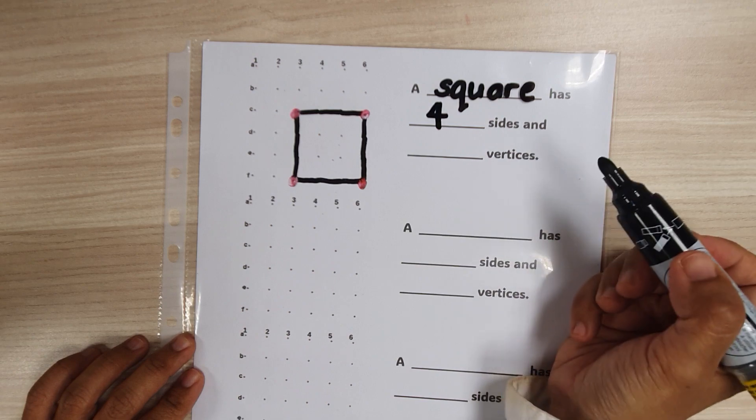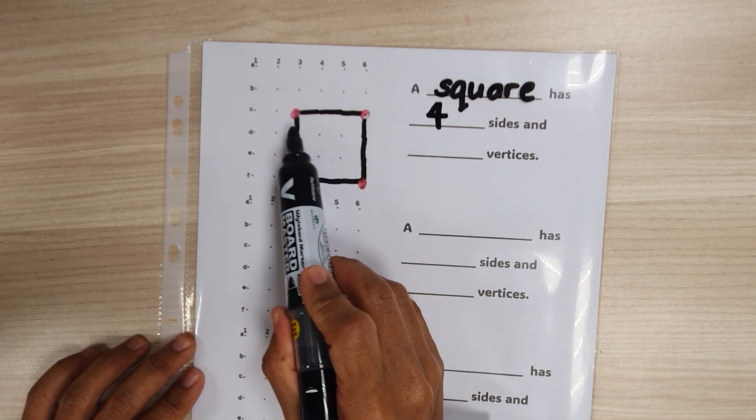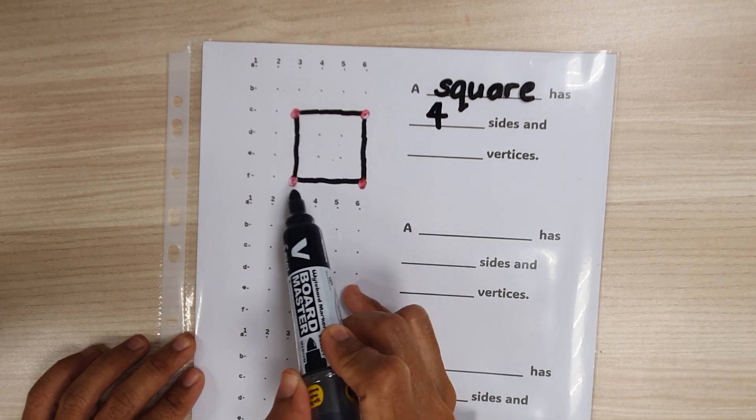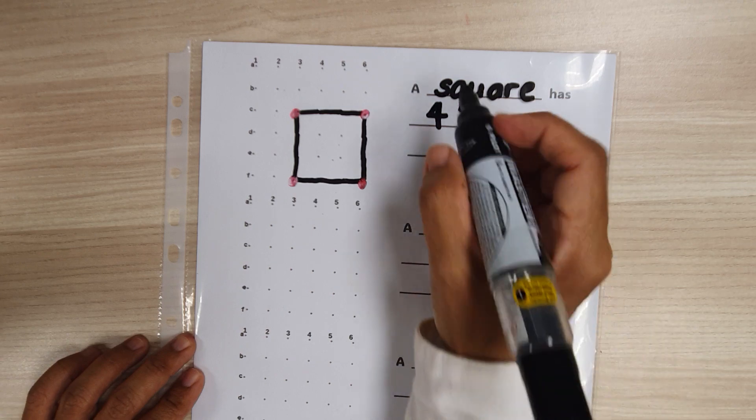And the vertices I have marked out in red. There are four vertices.